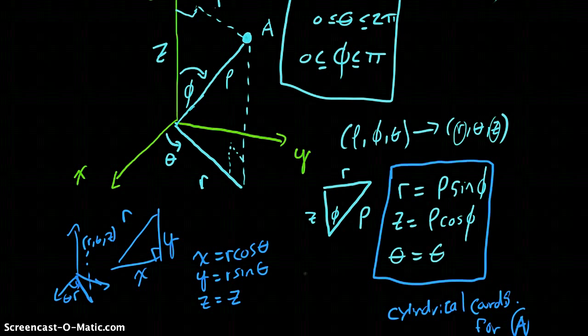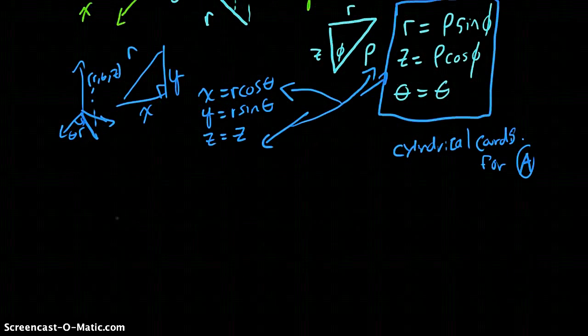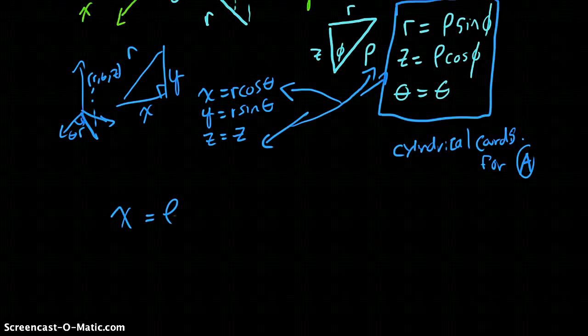Well, now, just substitute what we found over here for r and z, and put it in, take those and put them in for these r's and this z down here. Once we do that, we get the following. We get rho sine phi, cosine theta, rho sine phi, sine theta, and we leave z.